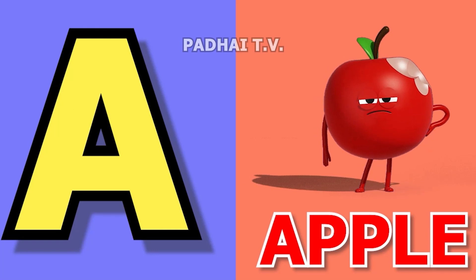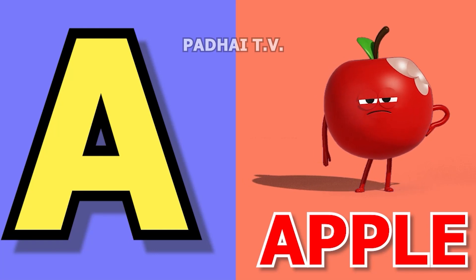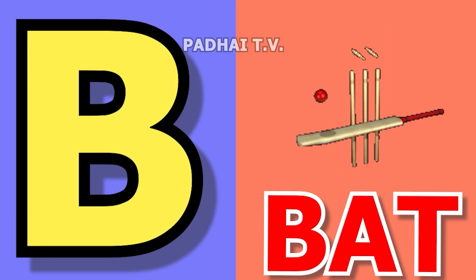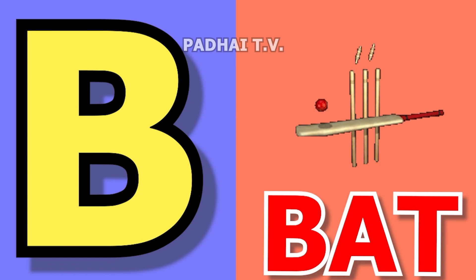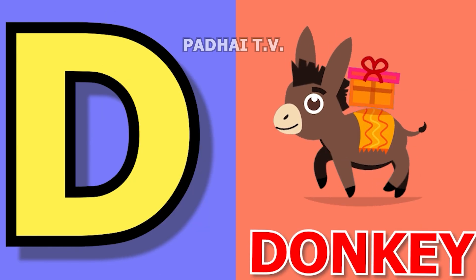A for apple, apple means shape. B for bat, bat means balla. C for candy, candy means candy. D for donkey, donkey means gada.